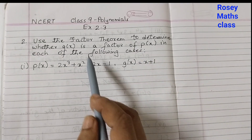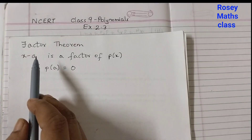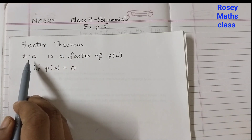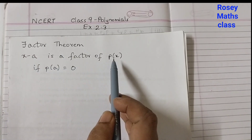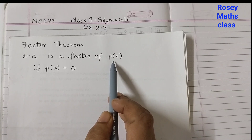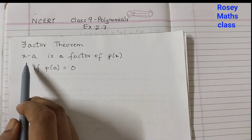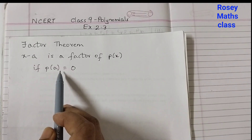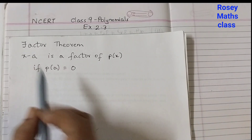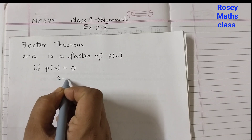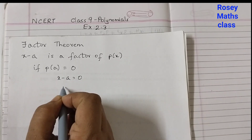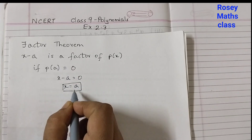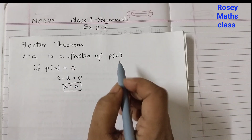To solve this problem, first you need to know what the factor theorem is. The factor theorem states that x minus a is a factor of p(x), where p(x) is any polynomial, if p(a) equals 0. So x minus a — if you set it to 0, x is equal to a.